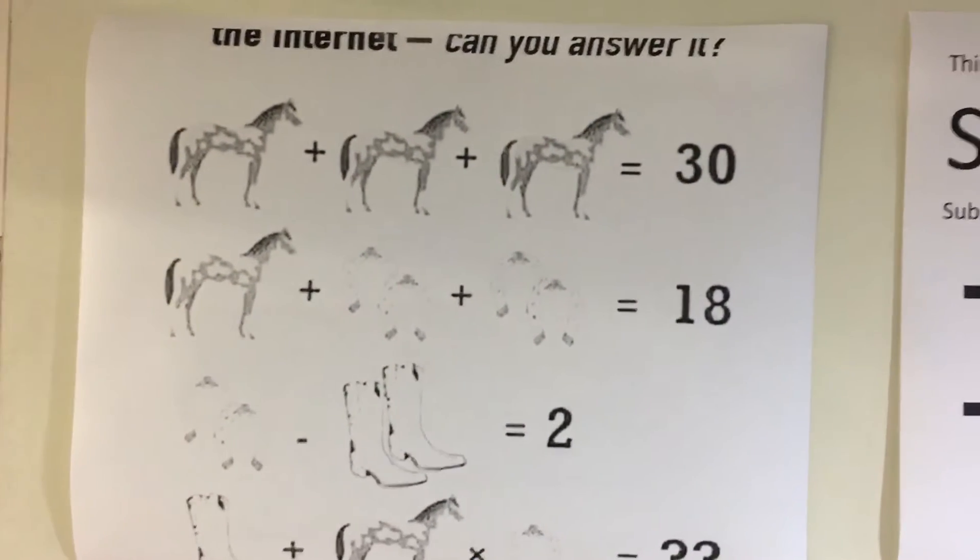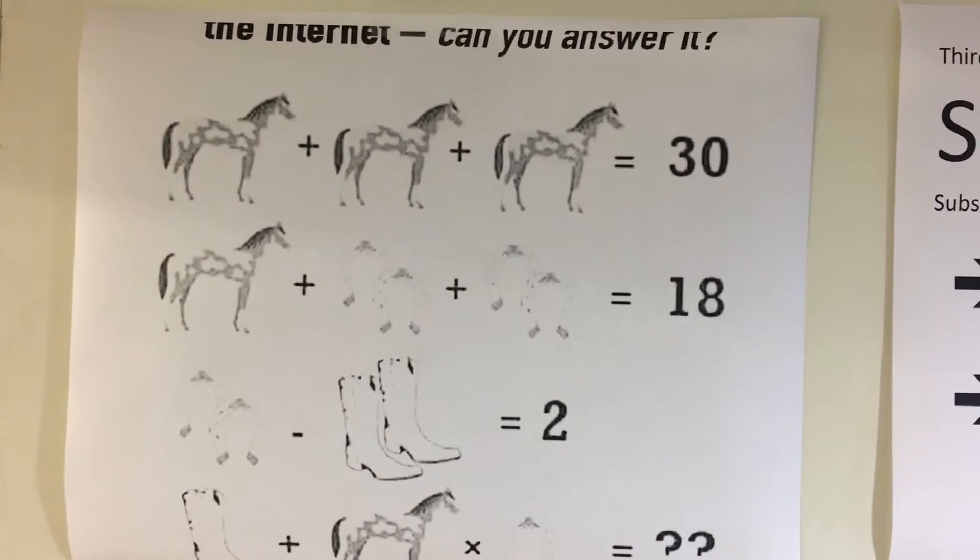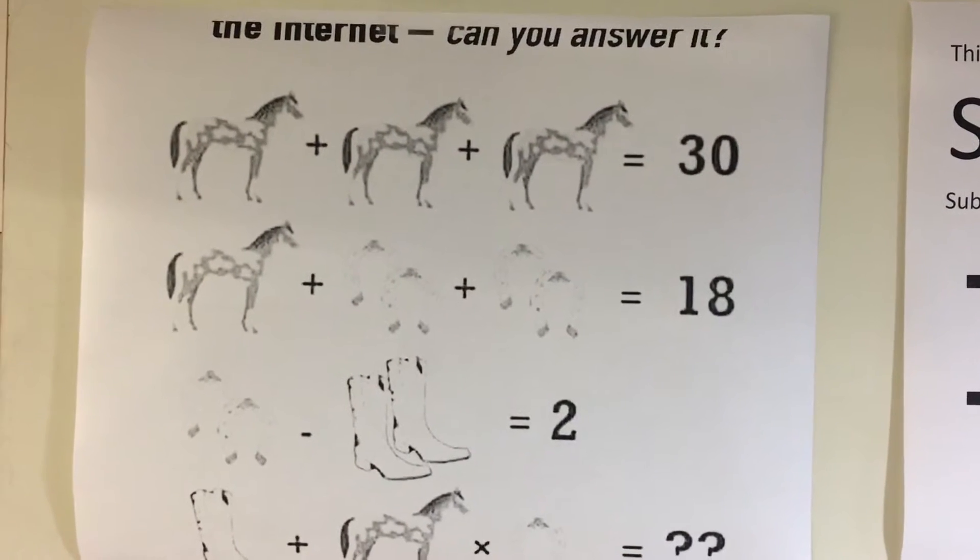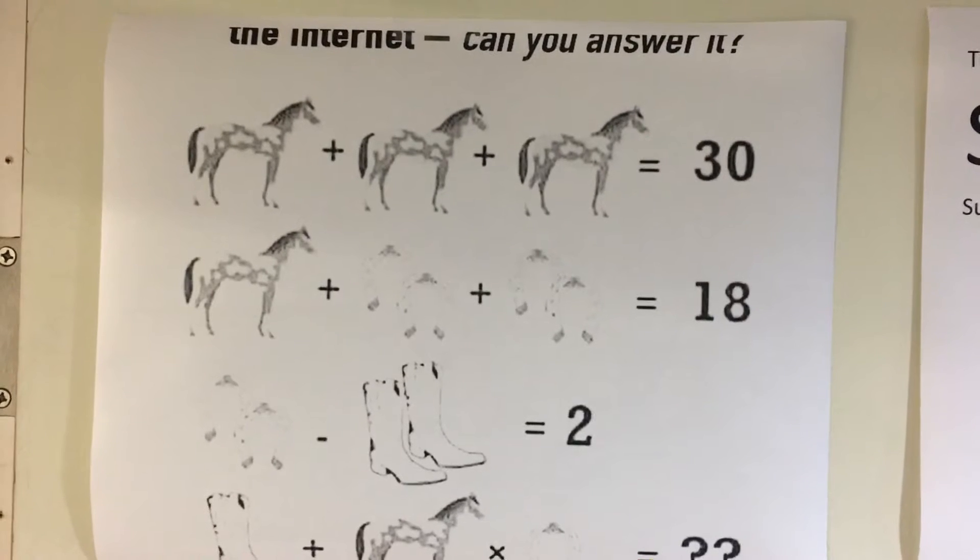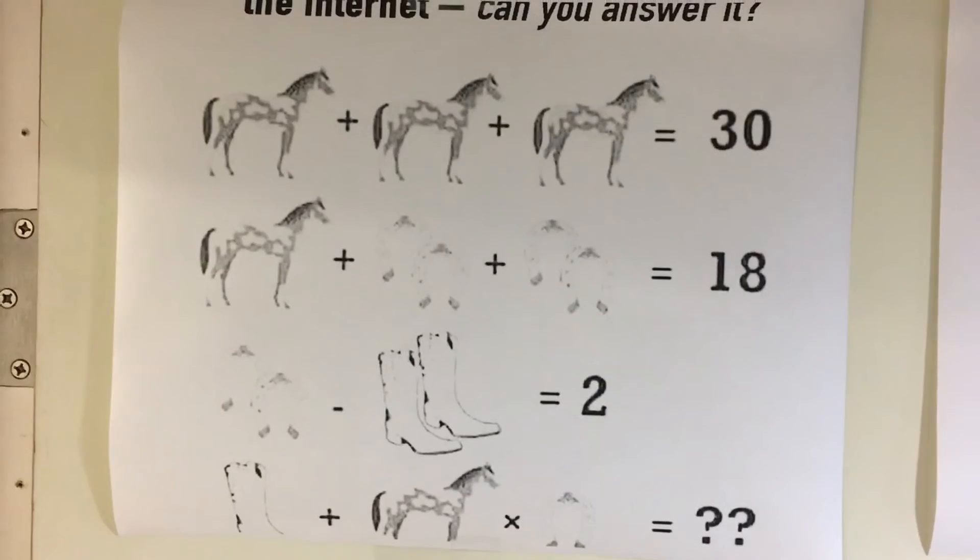There's a riddle on the internet right now involving horses, boots and horseshoes, and nobody can get the right answer. I wanted to show you how to get the correct answer using algebra. That's a picture of what's on the internet right now. The way to solve this is to remove the confusion and make this an algebraic formula.